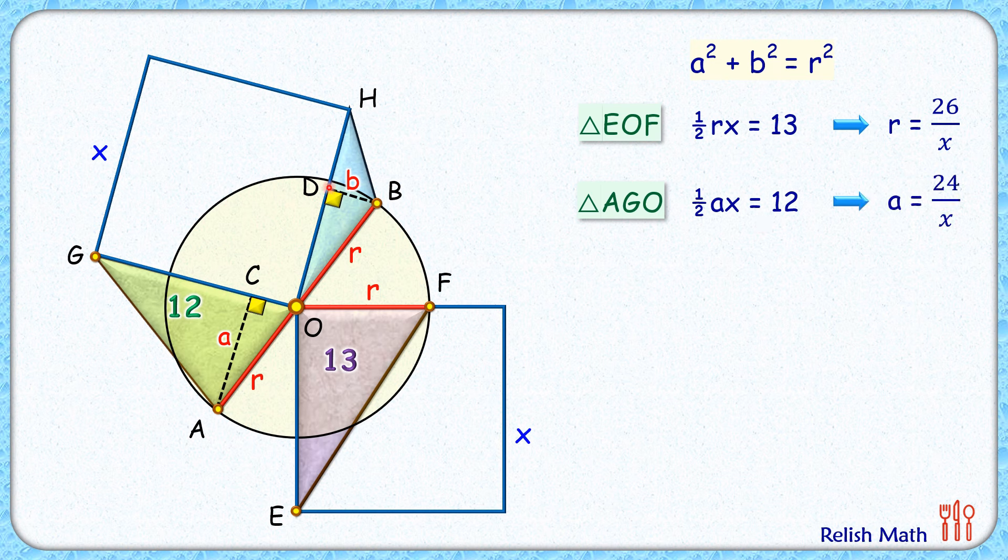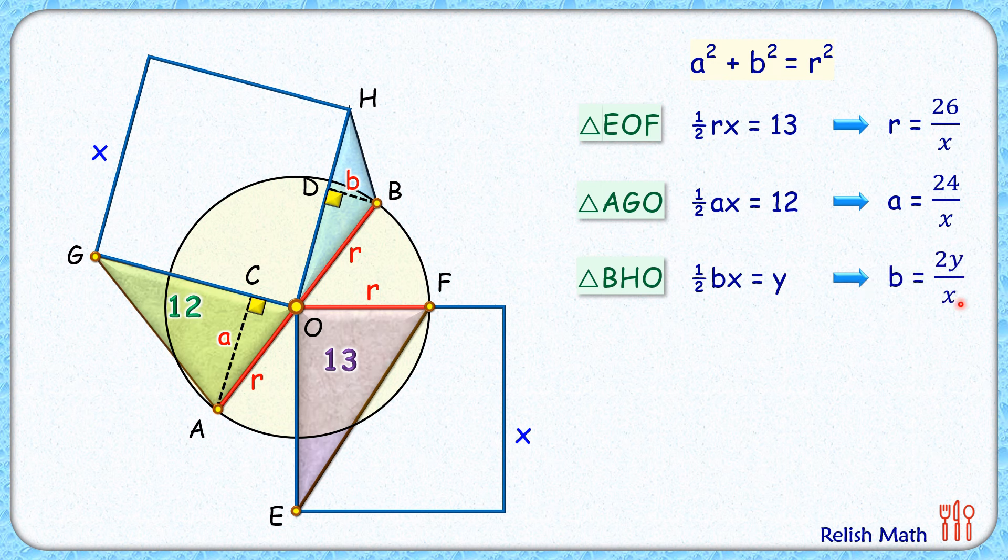Now for this blue triangle that's triangle BHO. Let's assume its area is y cm square. So we are getting half of base into height. Base is x, height is b. So half of b times x is y. And this y is what we have to find, area of blue triangle. From here we are getting b is 2 times y upon x.